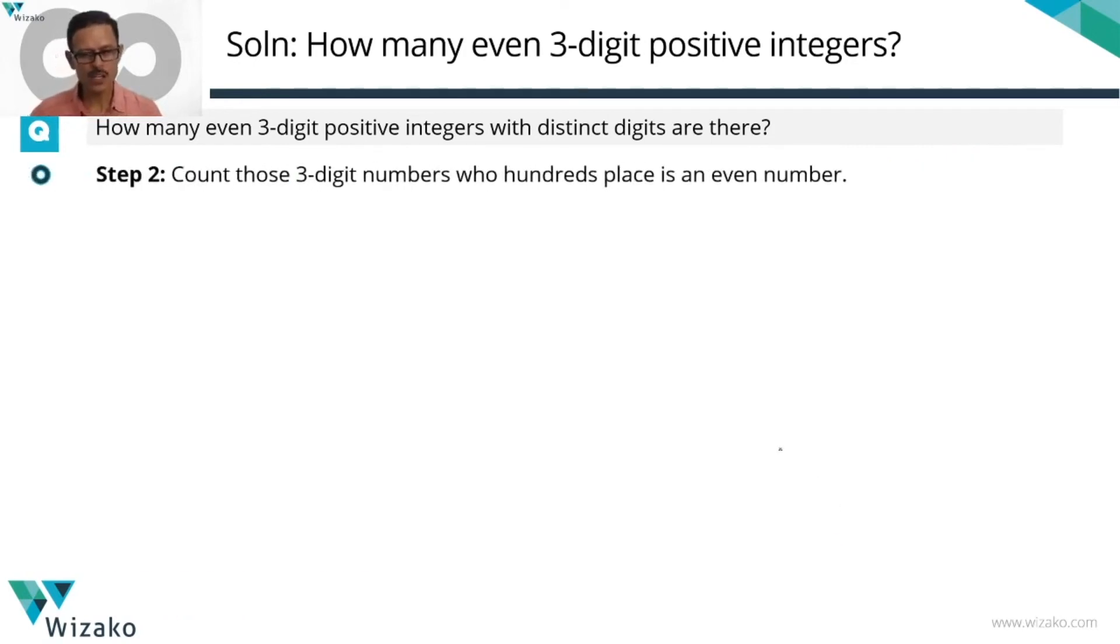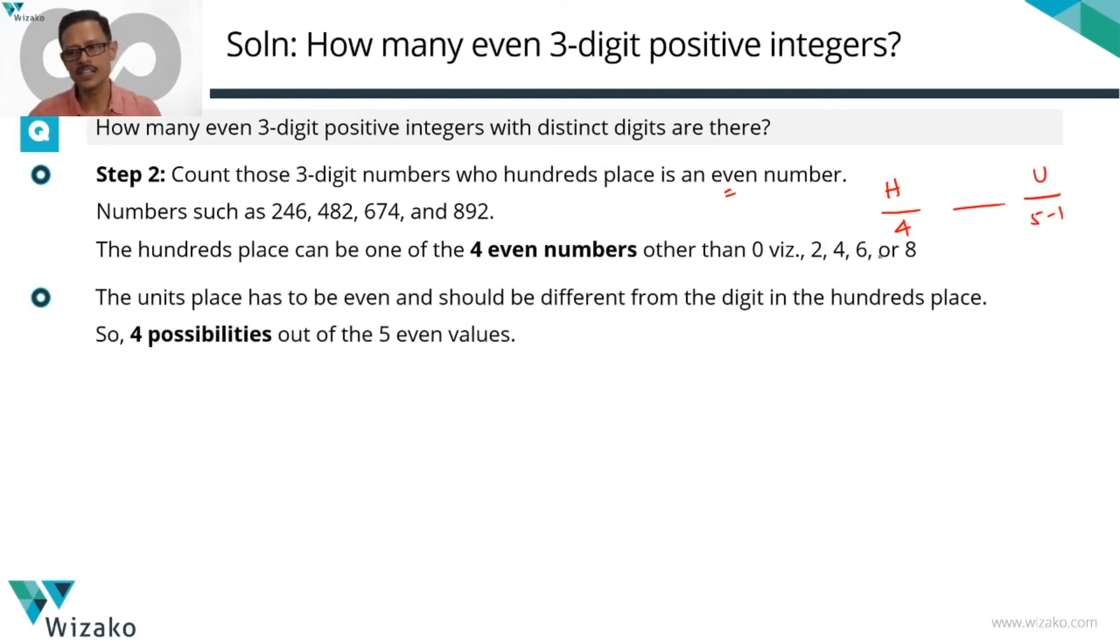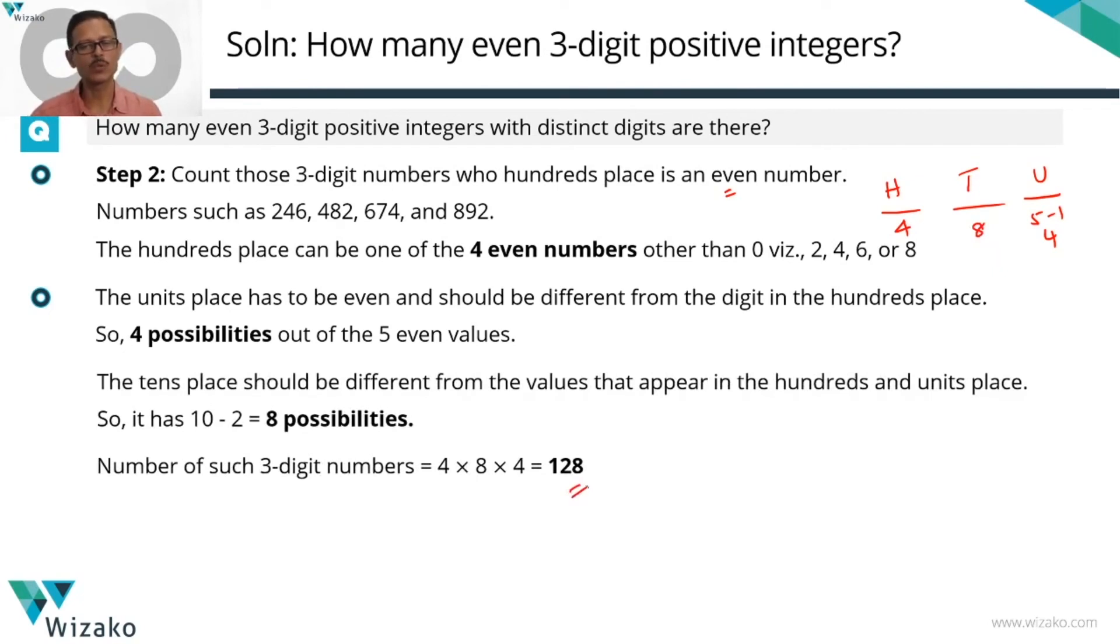So move to the second step. Counting those three digit numbers where the hundreds place is even. So hundreds place has four options as we had seen. It cannot be a zero. So four such cases. Units place had five, but the one that appeared in the hundreds place cannot appear here. So we have four possibilities for the units place too. Tens place discussion is exactly the same. Ten possible values. The one that appeared in the hundreds and the units place, those two cannot appear in the tens place. So we're left with eight possible cases. 4 times 8 times 4, that's equal to 128. Total number of numbers is the count of step 1 and count of step 2. It's equal to 328.